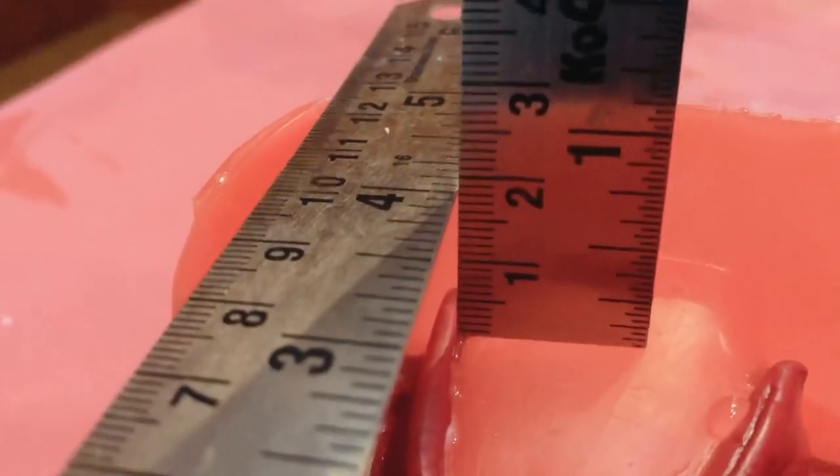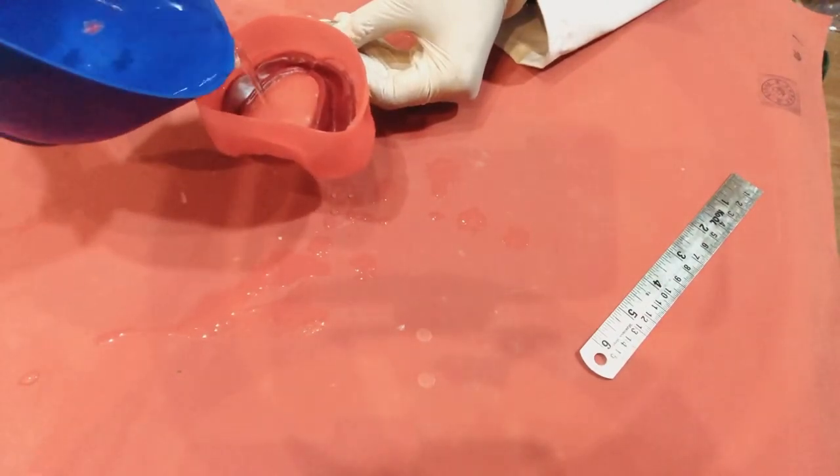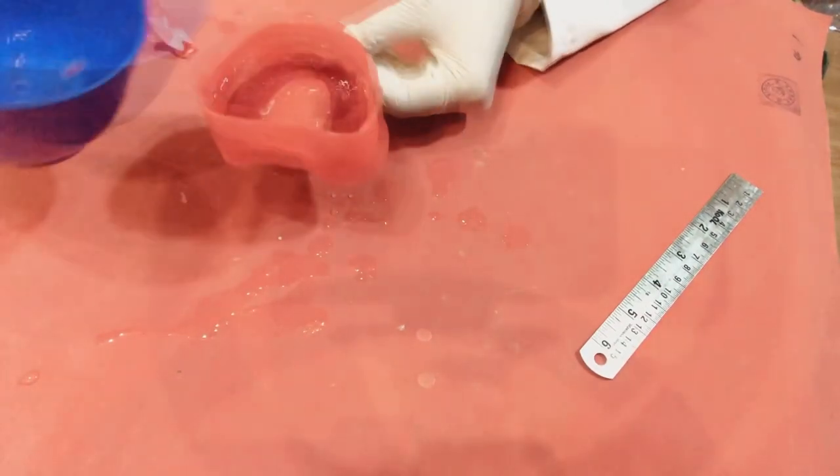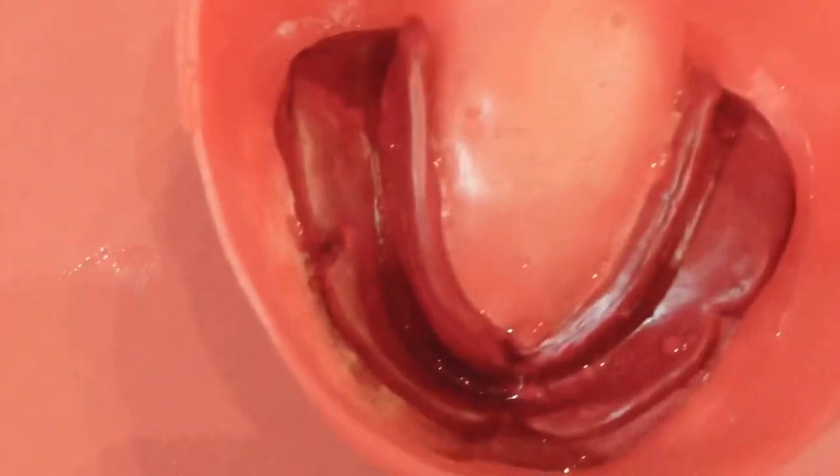Before winding up, check that there are no leaks by pouring in some water. That's the mandibular impression with beading and boxing completed.